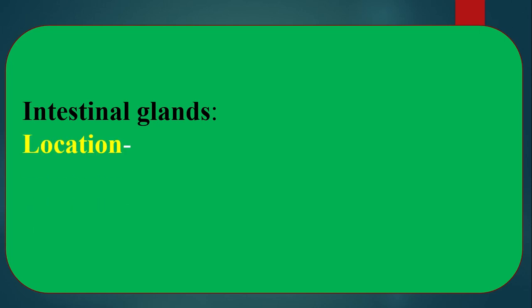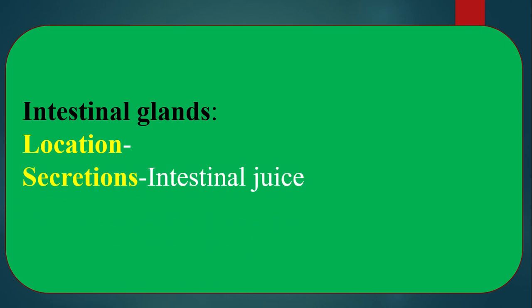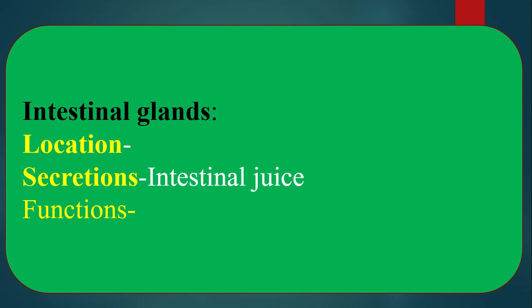Intestinal glands: the inner wall of the intestine carries a huge amount of small glands called intestinal glands. These may be small intestinal glands or large intestinal glands. Their secretion is called intestinal juice.